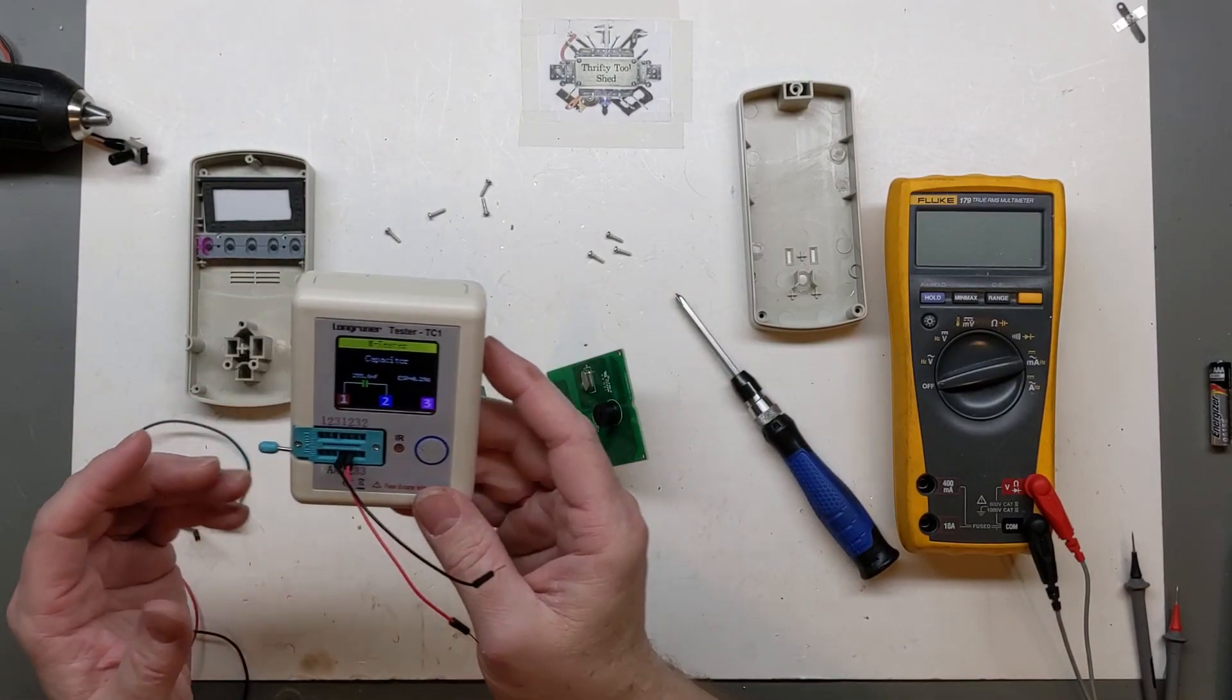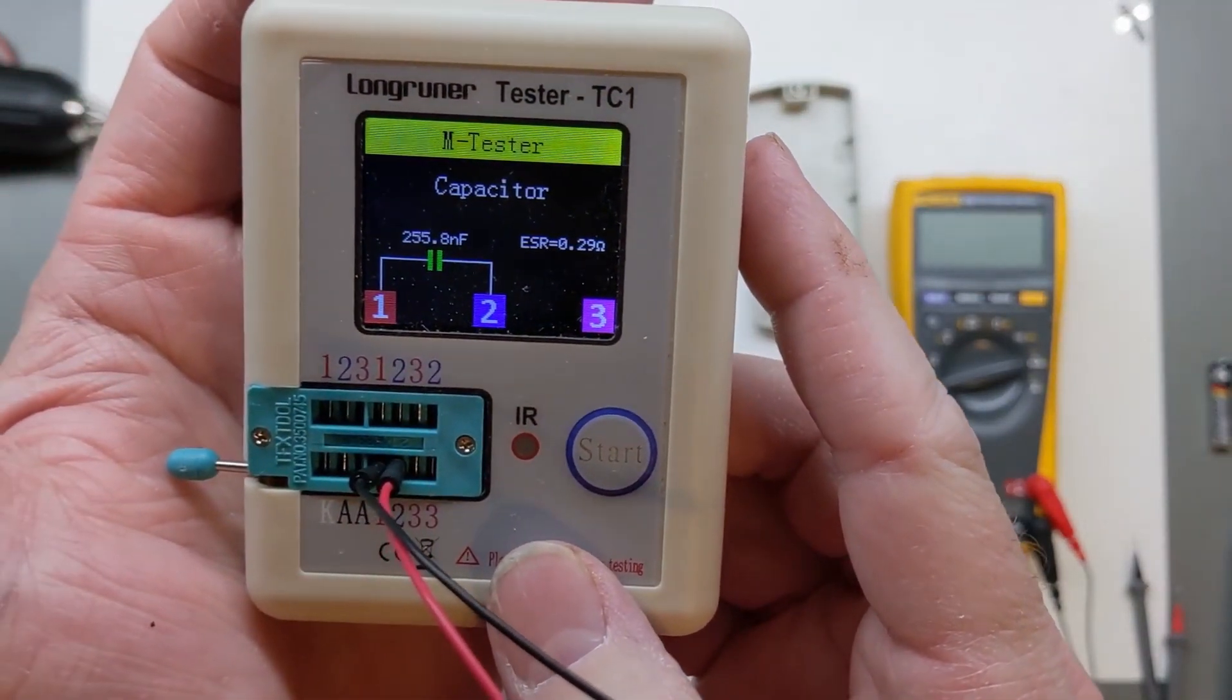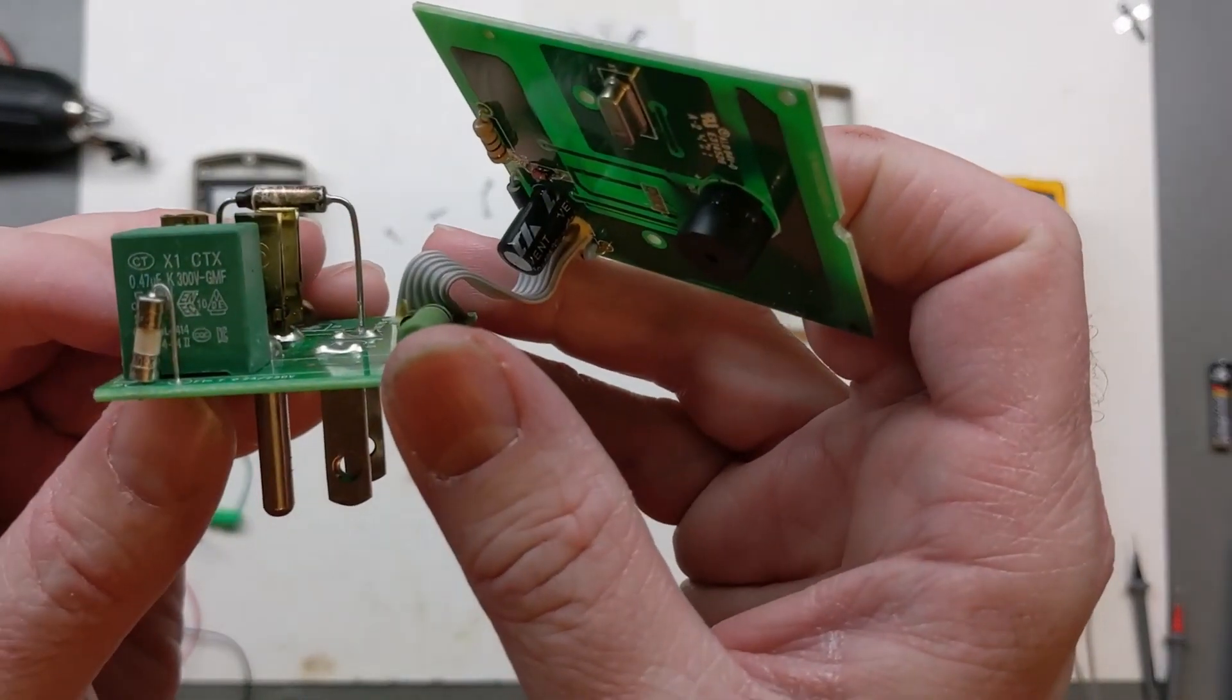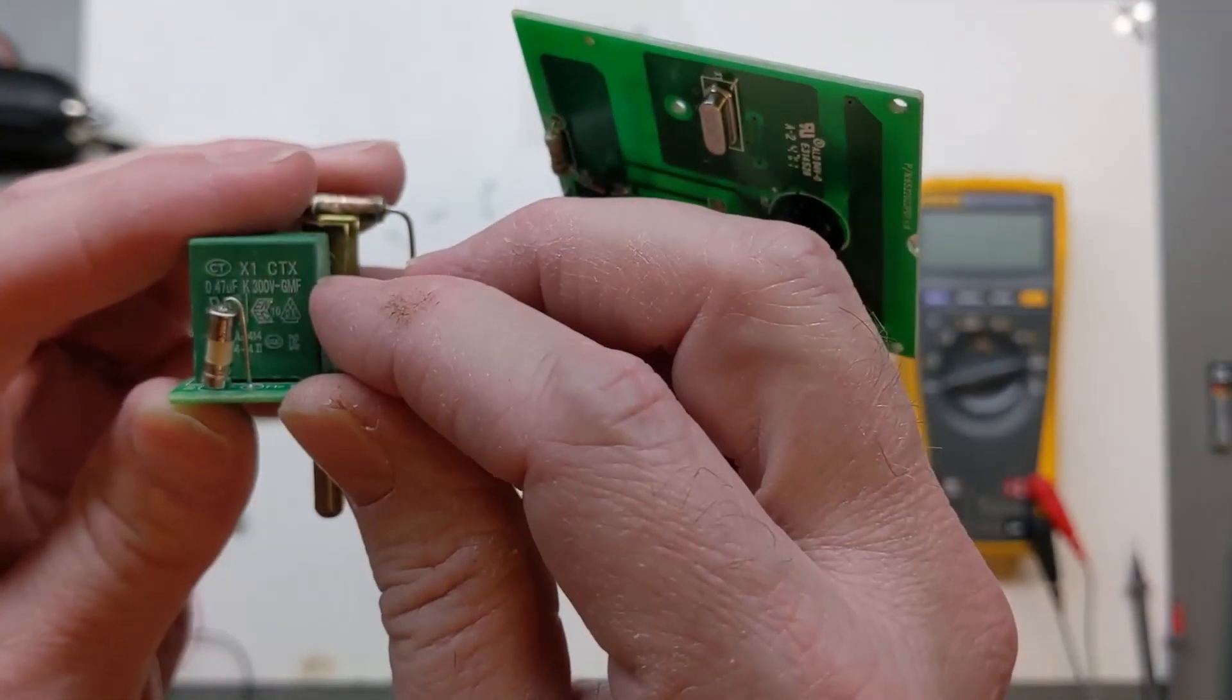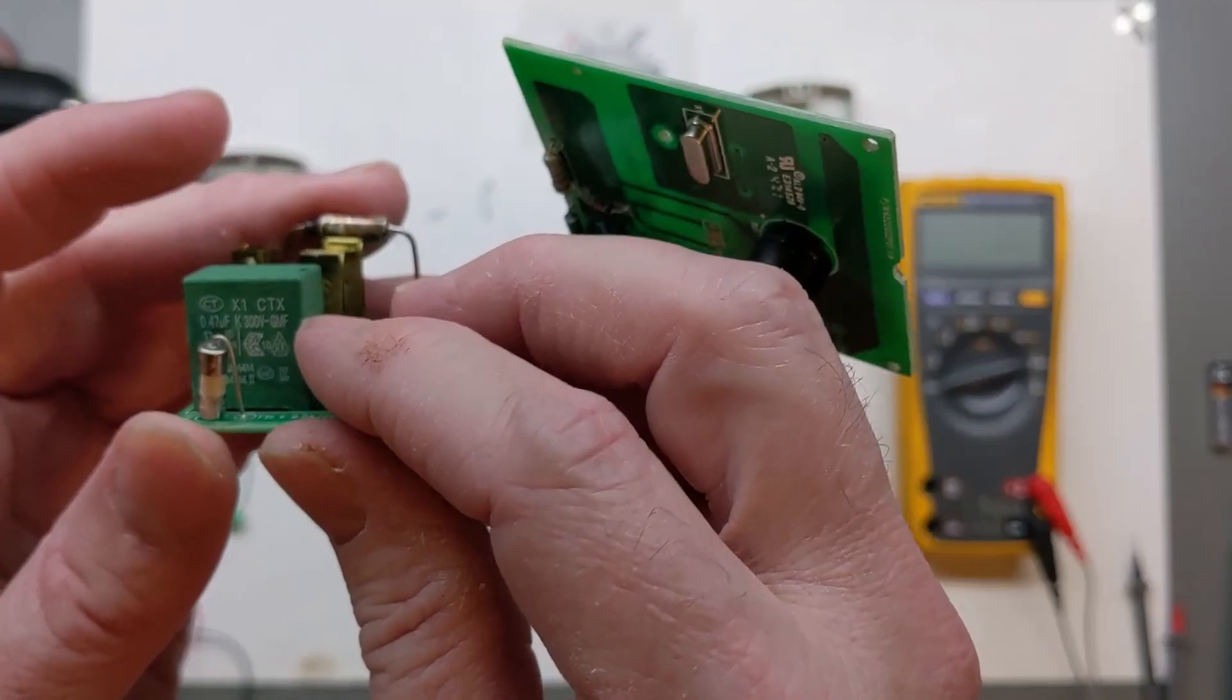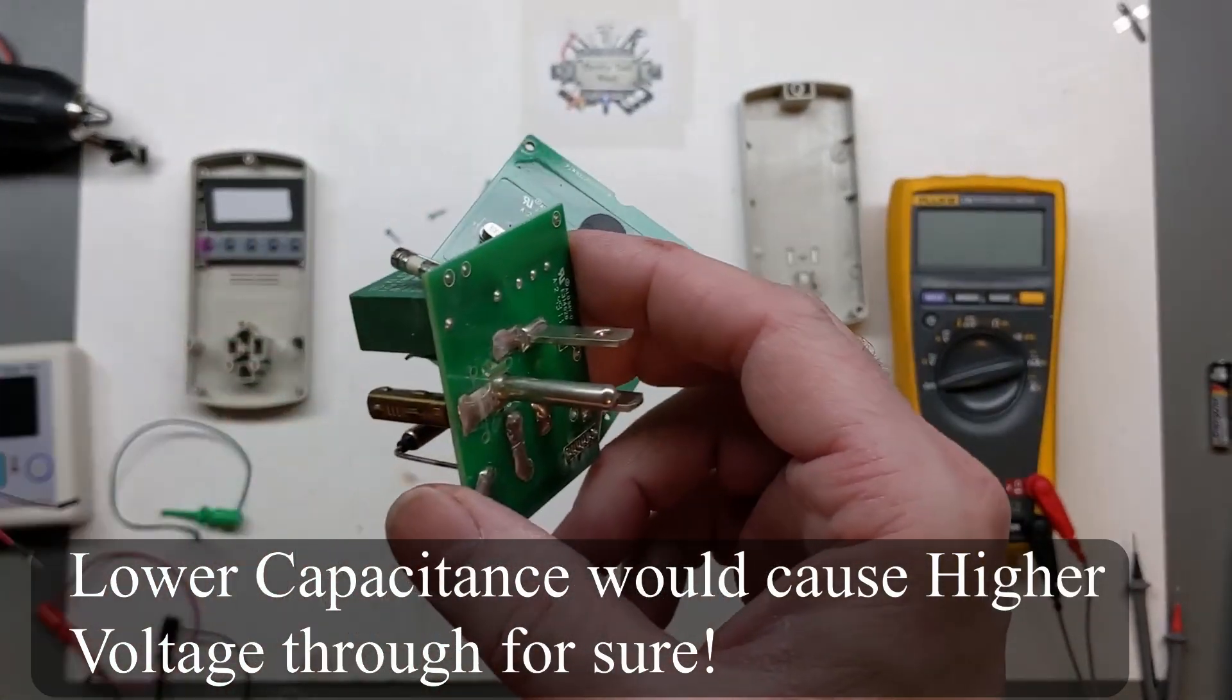All right, 255 nanofarad. This is a 0.47 micro you can read that. So mains rated 0.47 micro, so that should be 470 nano. So let's remove this and see what we get.